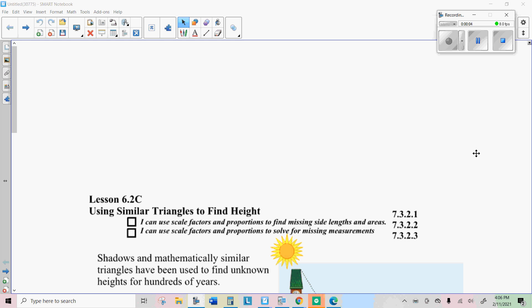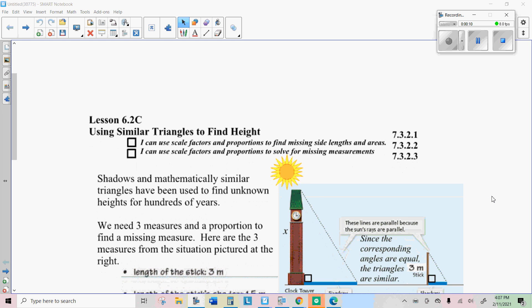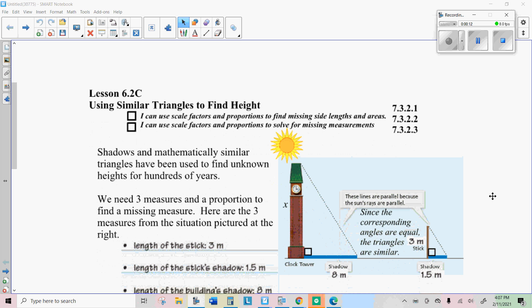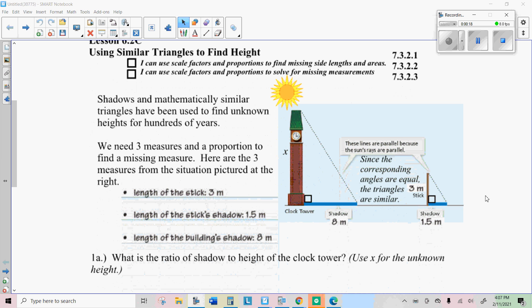Well, howdy there, Internet students. Mr. Hermsen again. Today we're going to use the idea that we learned yesterday about similar objects to help us find the heights of things using similar triangles. So here's what it's going to look like. And you can actually use these methods outside to estimate heights of things.